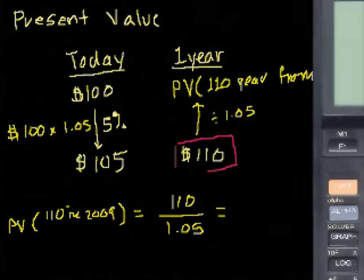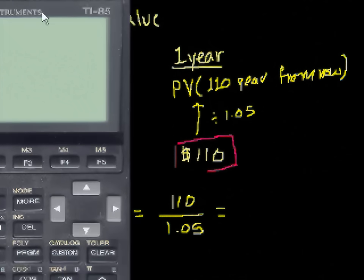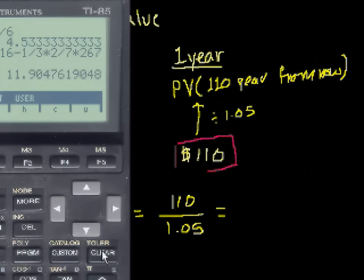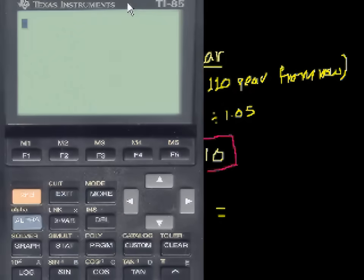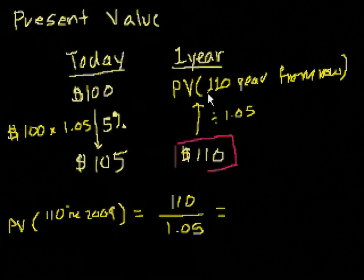...is equal to $110 divided by 1.05. Which is equal to, let me take out this calculator. Let me clear everything. So I want to do 110 divided by 1.05 is equal to 104.76. So it equals $104.76.